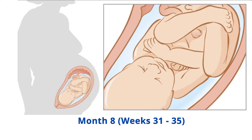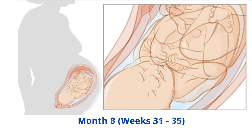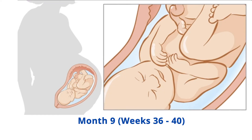Month 8, weeks 31-35: your baby gains half a pound or 230 grams every week. They are probably head down in the uterus. Their movements will peak in week 32 and their organs are almost completely developed, although their lungs may still be immature. Month 9, weeks 36-40: your baby is gaining a lot of fat each day. The baby's head will begin to settle downward deep inside the pelvis as it prepares for birth.